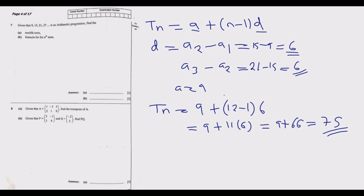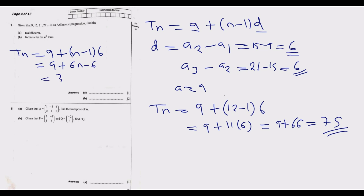For part b, the formula for the nth term: Tₙ equals 9 plus n minus 1 multiplied by 6. Expanding: 9 plus 6n minus 6, which simplifies to 3 plus 6n. So Tₙ equals 3 plus 6n. That's how you answer part b to get the maximum possible marks.